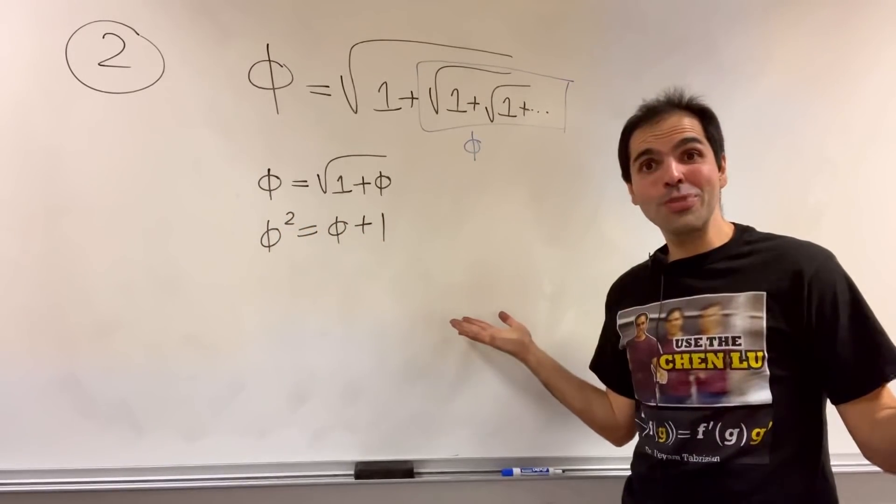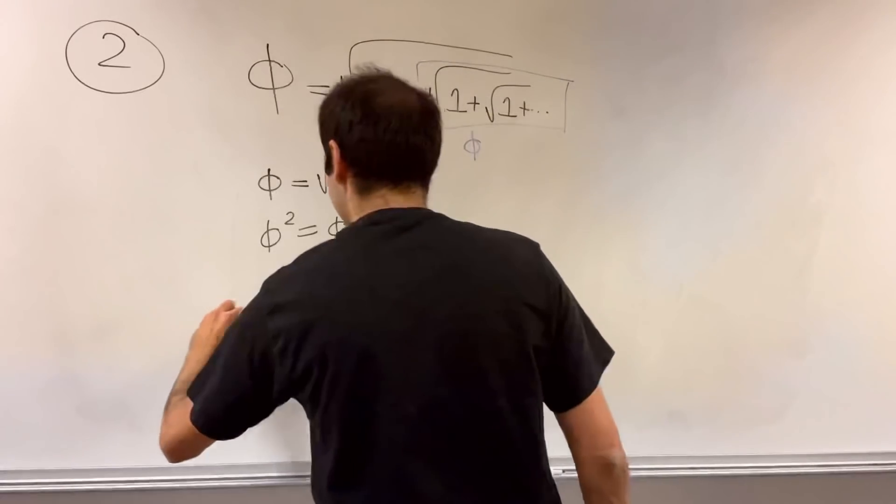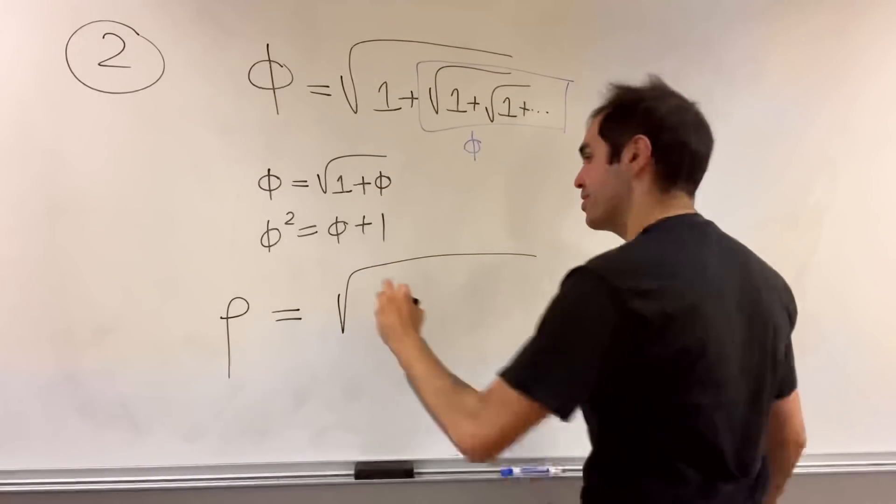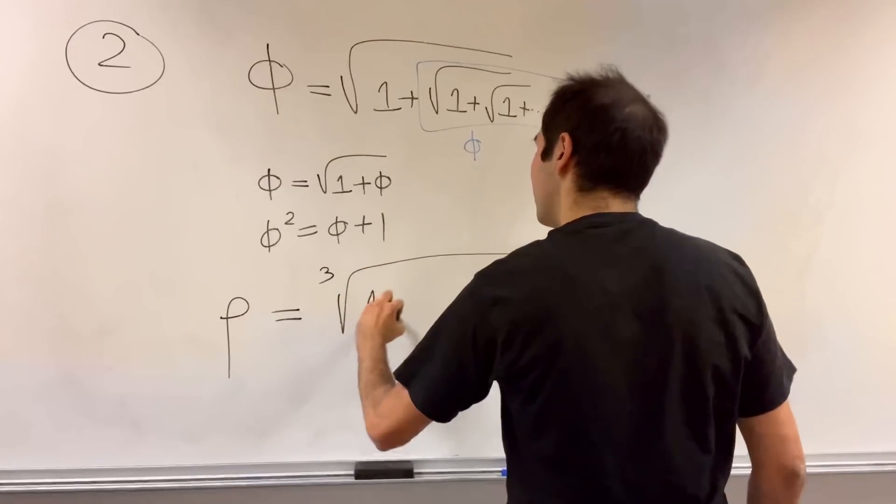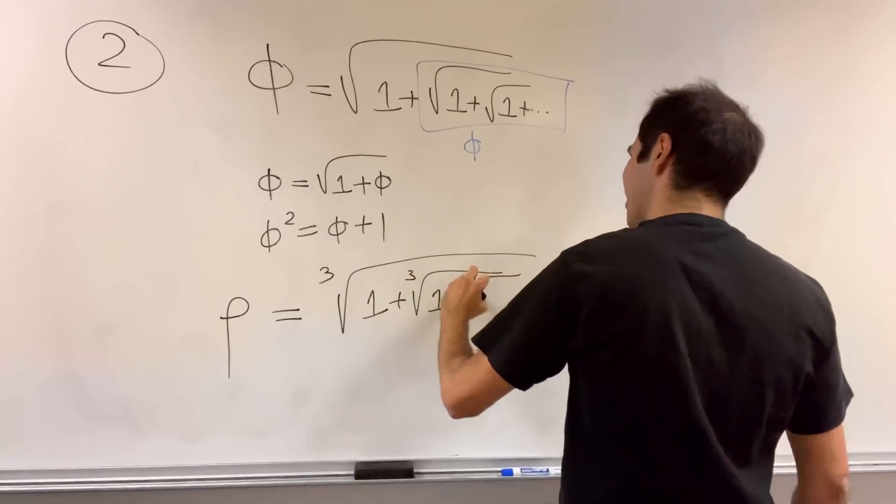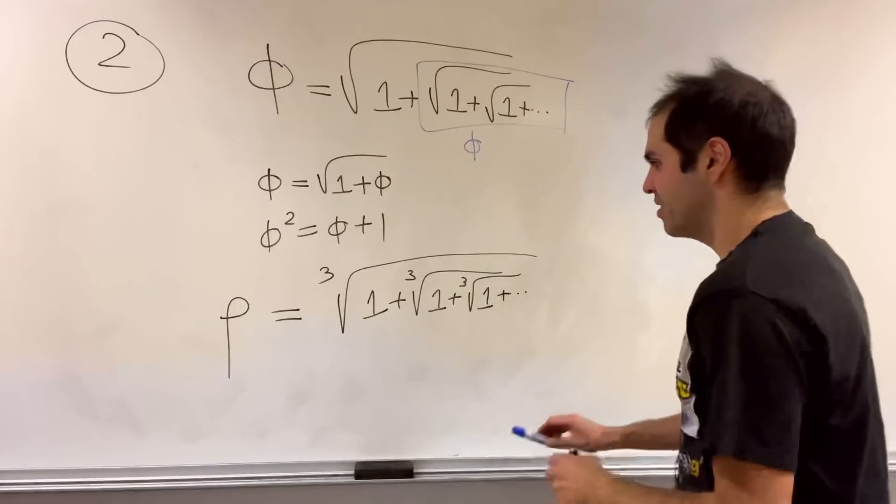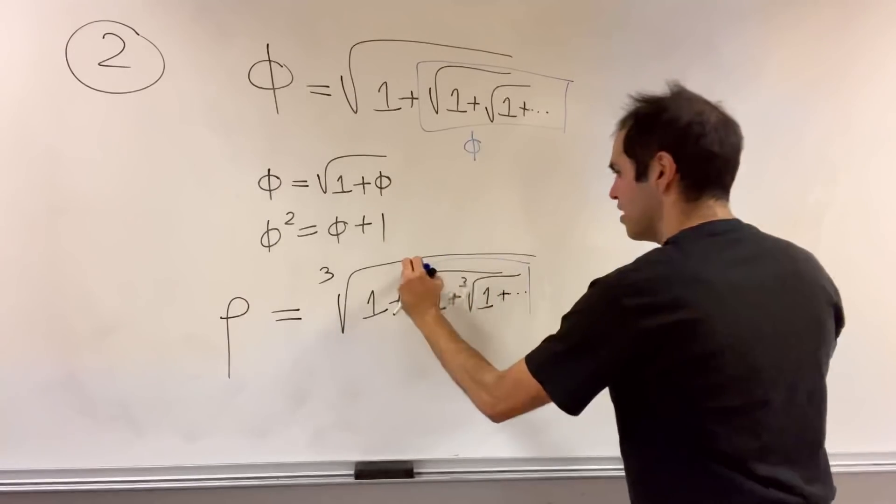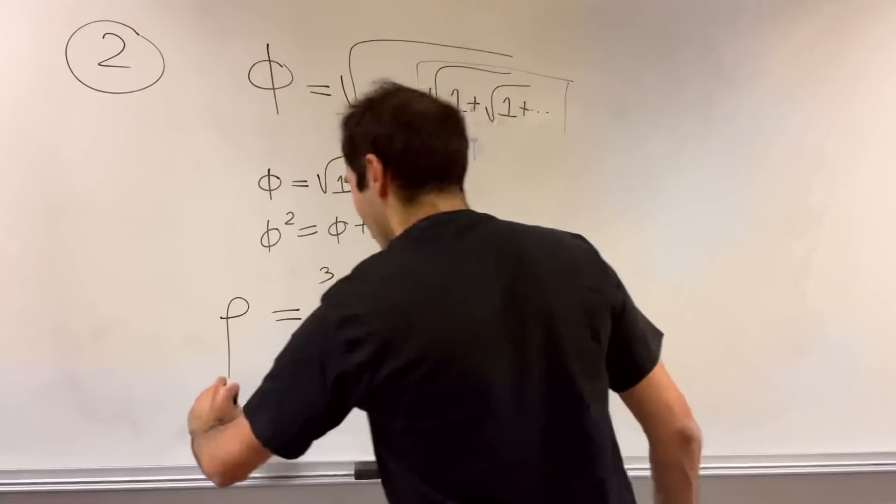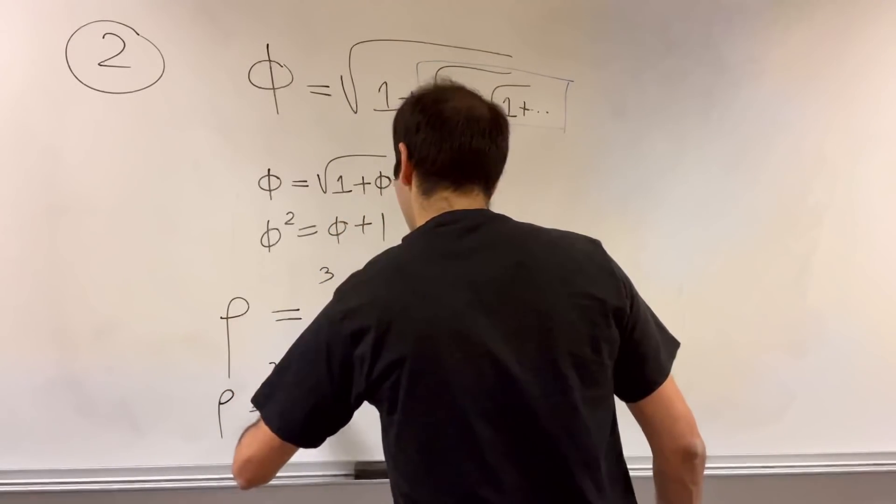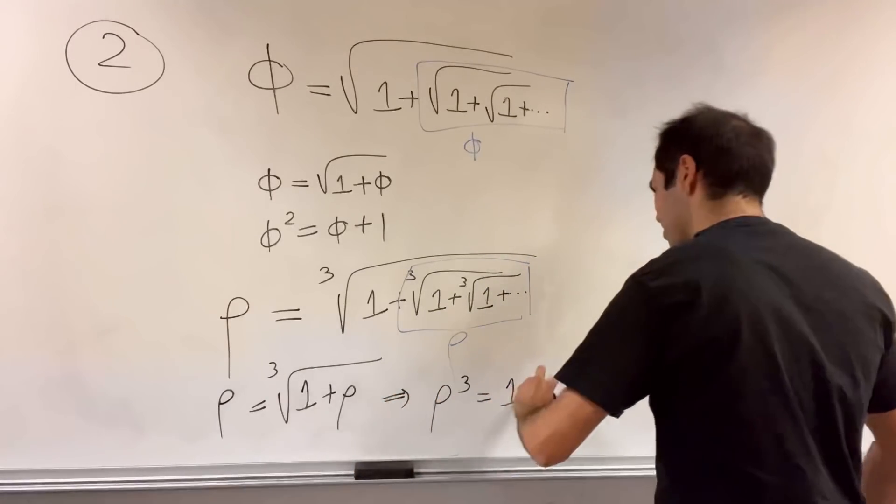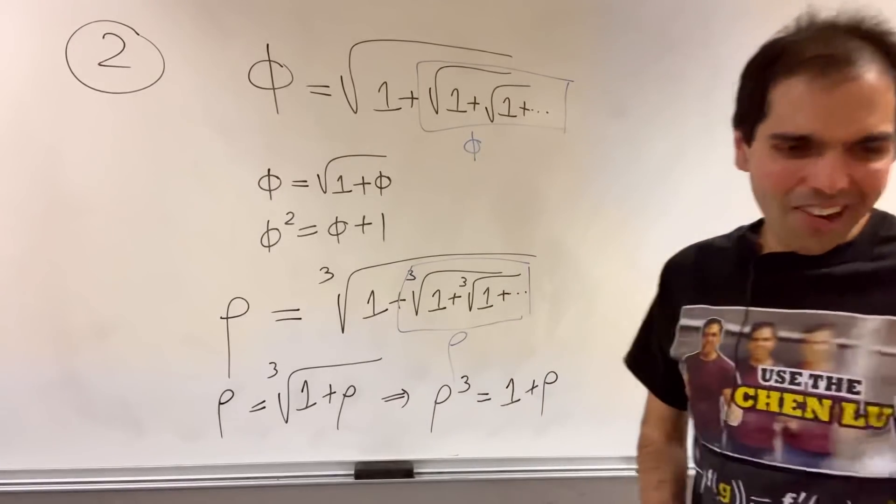And it should come to no surprise that for the plastic ratio you have the same thing, except you replace square root by cube root. So rho is cube root of one plus cube root of one plus cube root of one, etc., because if you let this cube root to be rho, then in fact you get rho cubed, or rho is cube root of one plus rho, so rho cubed equals one plus rho. How cool is that?